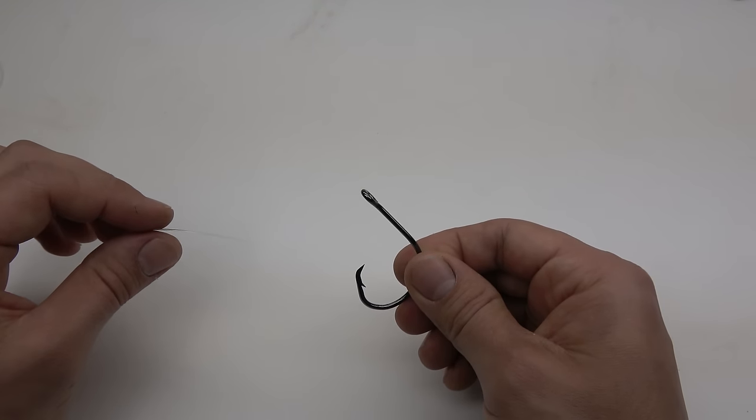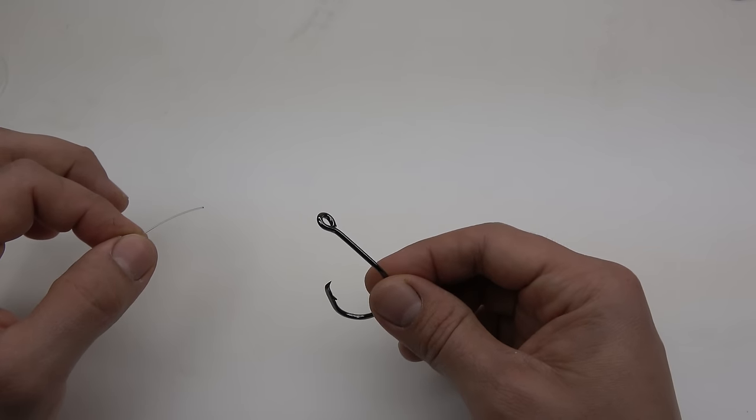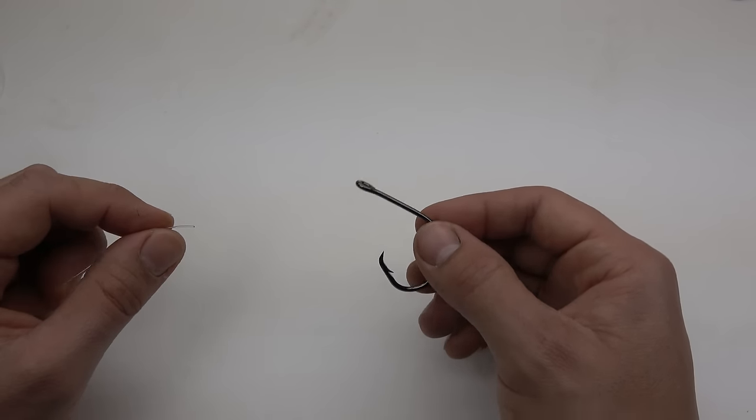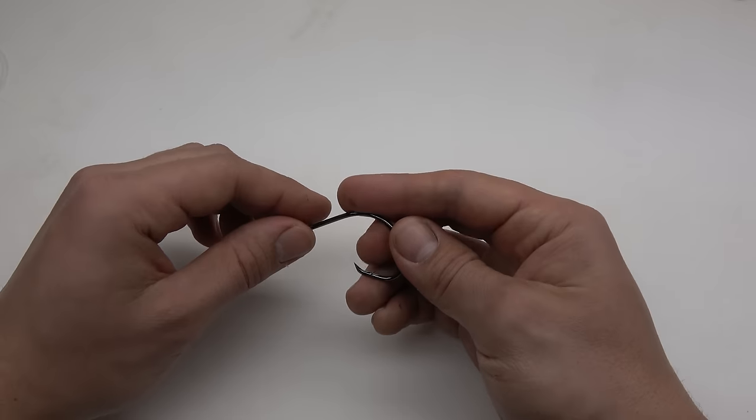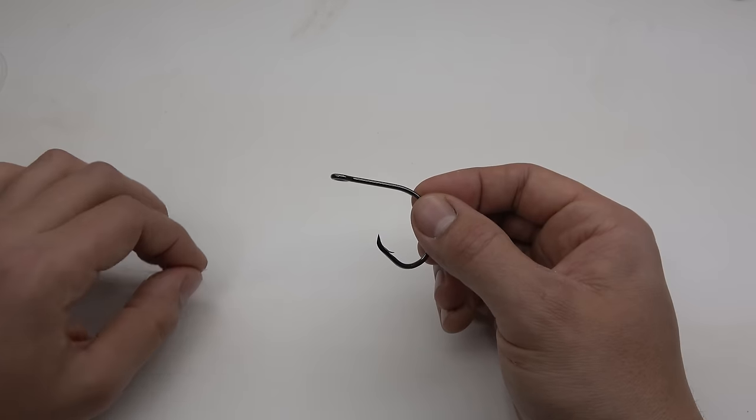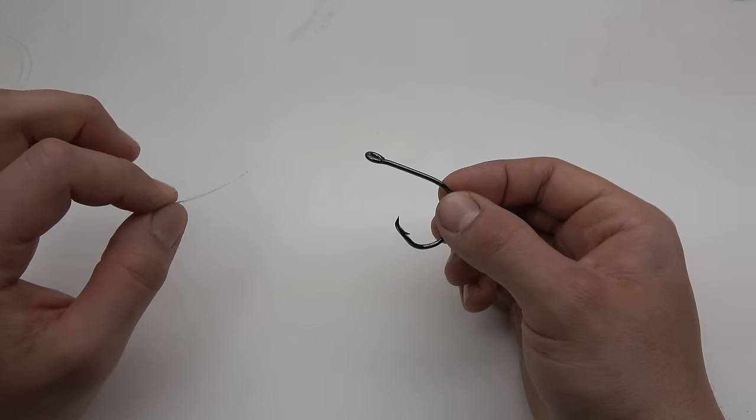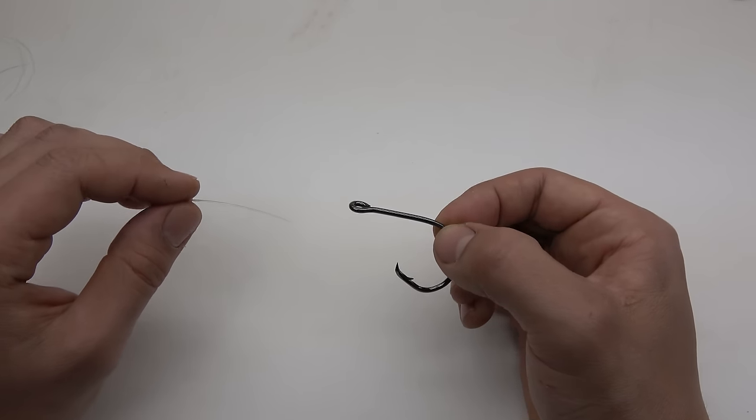You are going to want to attach the leader to the hook with either a snell knot or a palomar knot. The snell knot is supposed to help the hook turn, and seeing we are using circle hooks, that is important. However, I find the 30-pound leader material doesn't snell as well as heavier lines, so I'm going to go with a palomar knot.